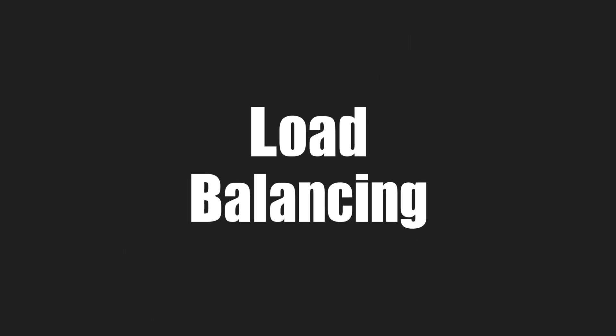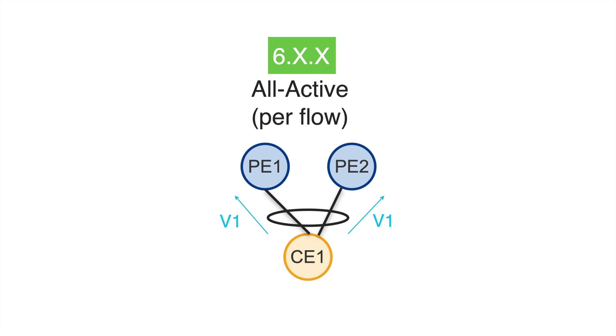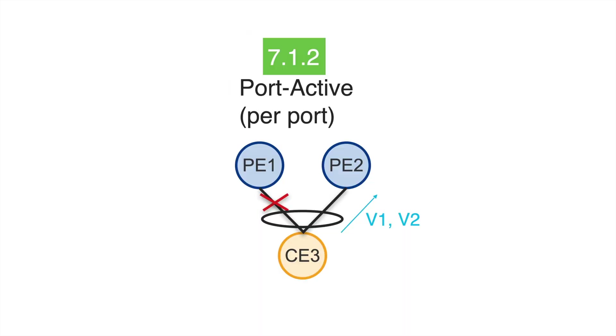Let me now do a very quick recap on the load balancing modes, because we are also introducing one more load balancing mode in 7.3.1. From the beginning of EVPN, we have the all-active load balancing mode, where PE1 and PE2 are acting together and the CE thinks it's connected to one device — the CE has one port-channel bundle. Later on, we introduced single-active mode, and also the port-active mode, which I talked about last time.